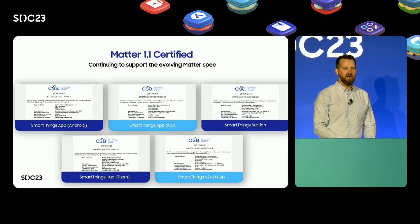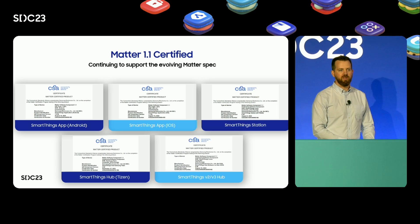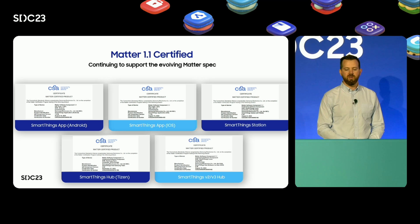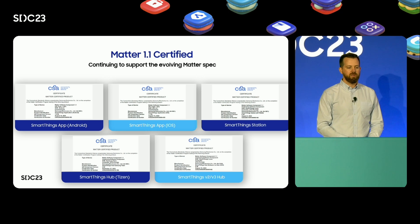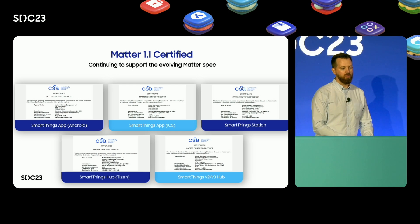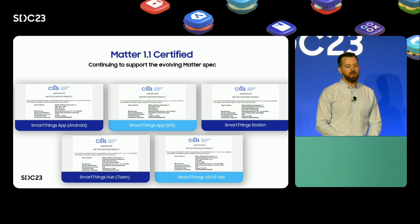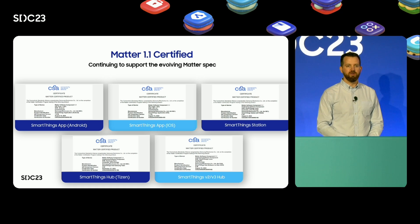Now let's get into some highlights. We are happy to announce that all Matter-enabled SmartThings offerings — from the Android and iOS apps to our hub platforms — have been fully certified for Matter 1.1. We're also looking forward to Matter 1.2 and beyond as part of our commitment to stay up-to-date with the ever-evolving Matter specification.